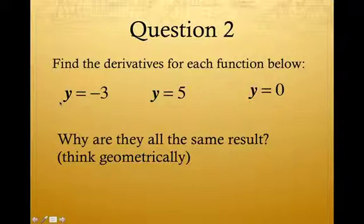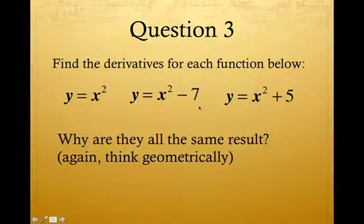So each of these functions have the same slope, and that's zero. So here's a rule: the rule is this - the derivative of any constant is zero. Knowing this rule, let's go into this question. Take a moment to consider it. Please press pause.